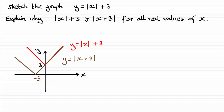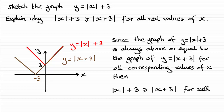In summary, since the graph of y equals the mod of x plus 3 is always above or equal to the graph of y equals the mod of all of x plus 3 for all corresponding values of x, the statement is proven: the mod of x plus 3 is always greater than or equal to the mod of all of x plus 3 for all real values of x.